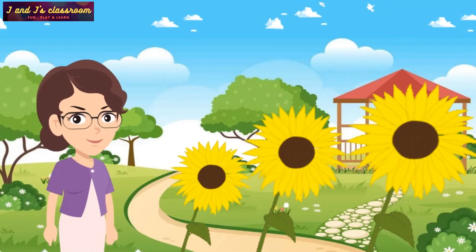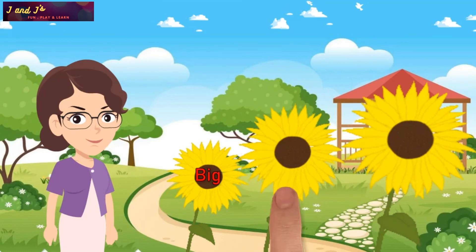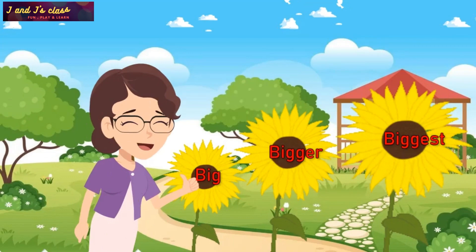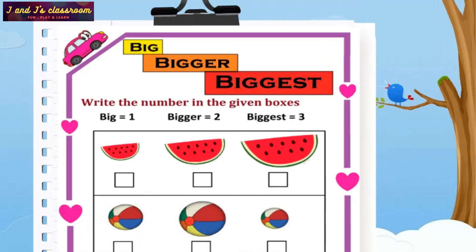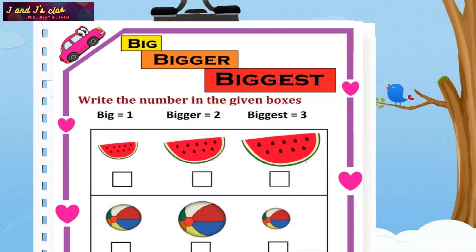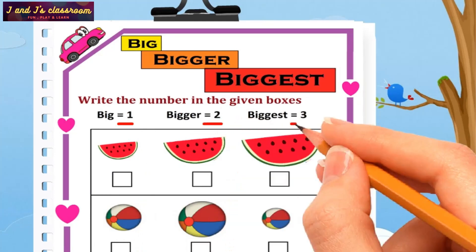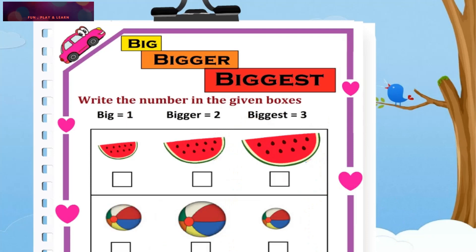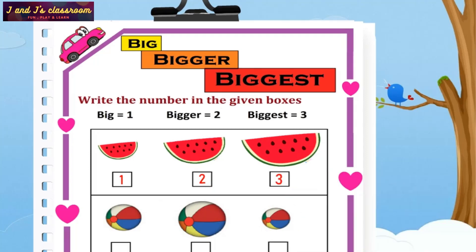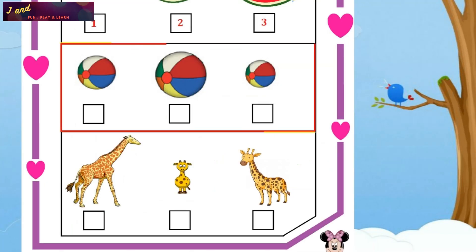Big, bigger, biggest — oh yeah, you're right! Now let me complete this worksheet. Write the number in the given boxes: if the image is big, write one; if it is bigger, write two; otherwise write number three. Big — yes, write number one. Bigger — yeah, write number two. Biggest — now write number three.